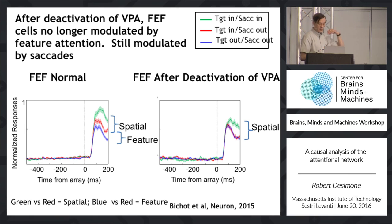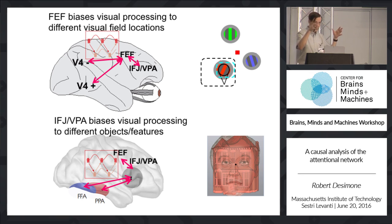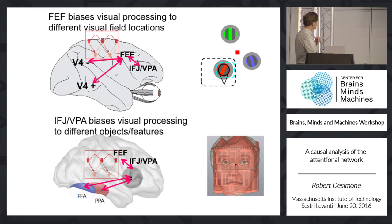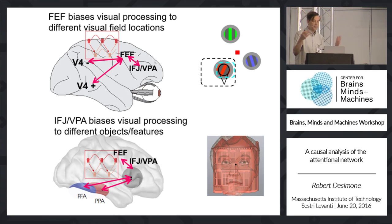This is consistent with the idea that VPA is the source of the signal about where the target object is. We're now thinking that VPA — or maybe the IFJ in humans — sets up the target search template in terms of objects and object features, computes the spatial location of the object with those target features, and sends that information to the frontal eye fields. The frontal eye fields then modulate activity back in posterior cortex according to target identity, while remaining dominant for purely spatial attention — an interactive system for both spatial and feature attention.